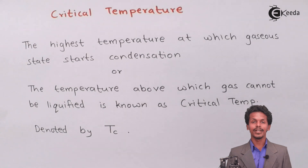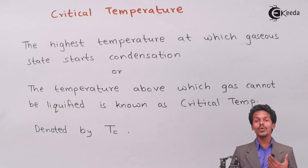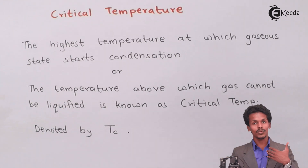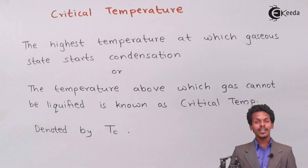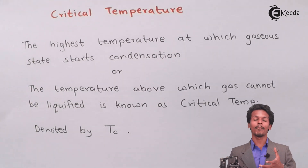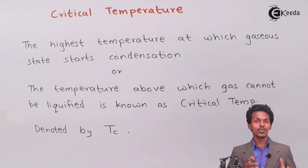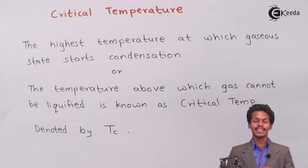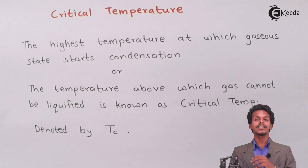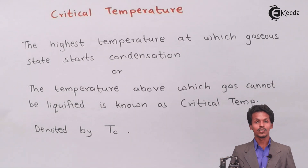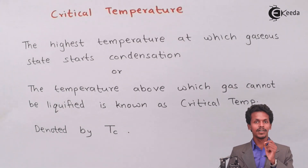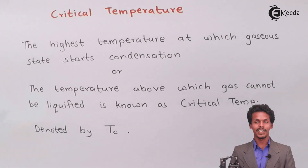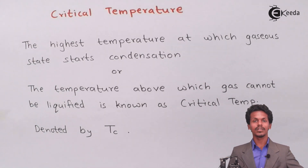If you want to convert a liquid into gas, you provide the boiling point or more temperature, so the substance moves into the gaseous state. But there is a point at which even applying more pressure cannot convert the gas back to the liquid state. That temperature at which even pressure cannot bring gas back to liquid is known as critical temperature.